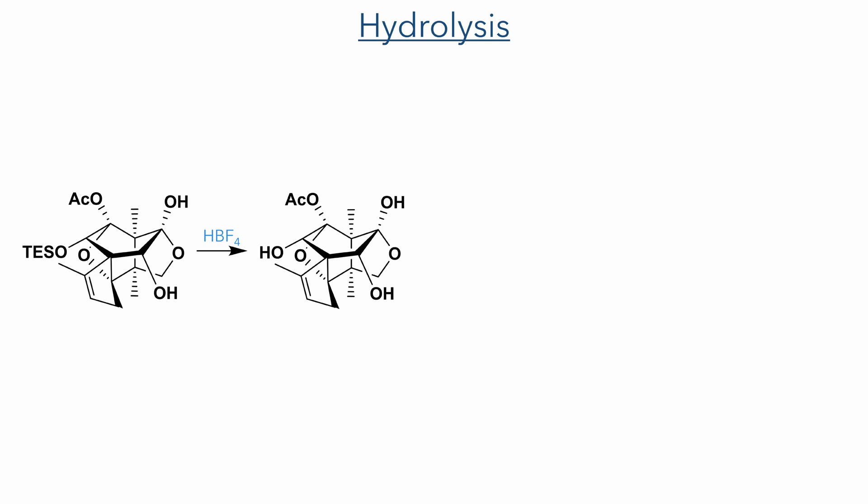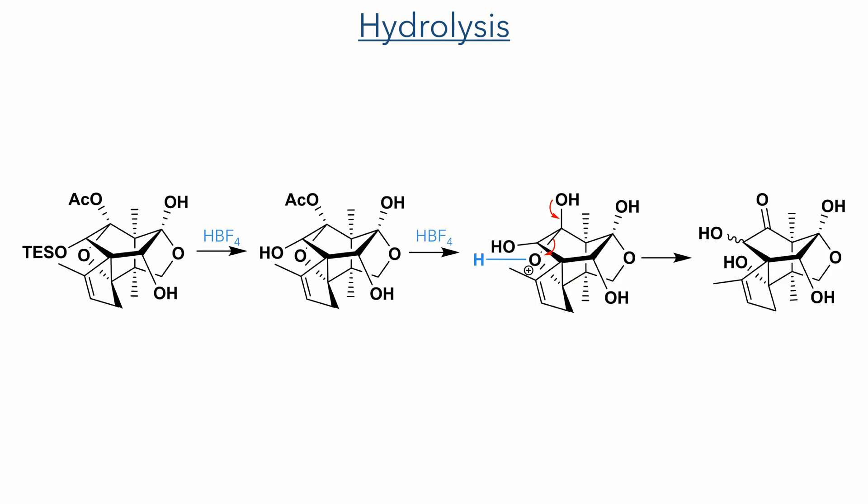With the four rings of the tetracyclic target now complete, the authors entered the final stages of the synthesis to install the correct functionality around the molecule. Reaction with fluoroboric acid first deprotected the TES group and then hydrolyzed the acetate ester previously installed to lock the intermediate into the boat conformation. With the acetate group removed, the ketal could then revert back to a ketone and hydroxyl group.